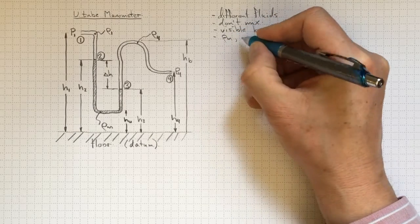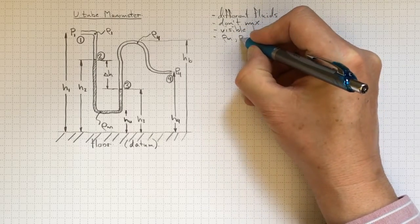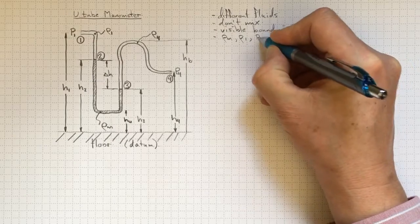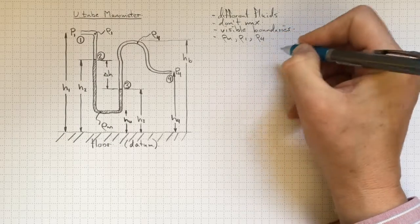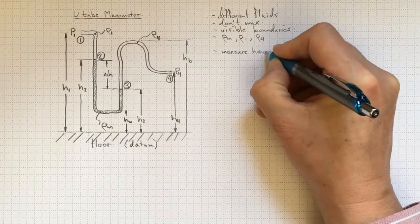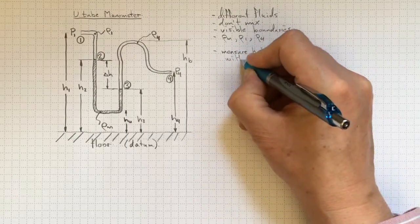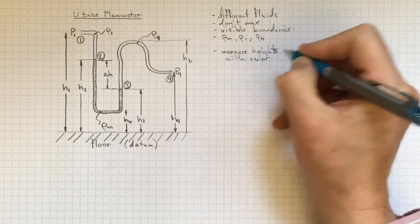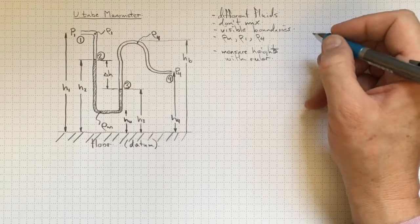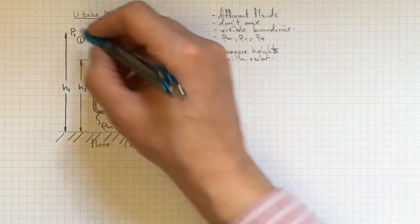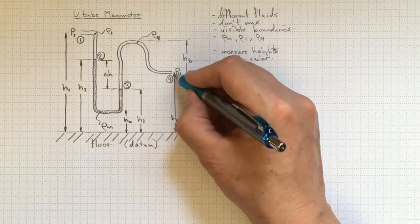The boundaries are visible, and we know what the densities are of each of the fluids. So the density of the manometer fluid and the densities of any other fluids that happen to be in the tubing system. If we measure the heights with a ruler, then we can use fluid statics to figure out what is the difference between the pressure at location one and the pressure at location four.